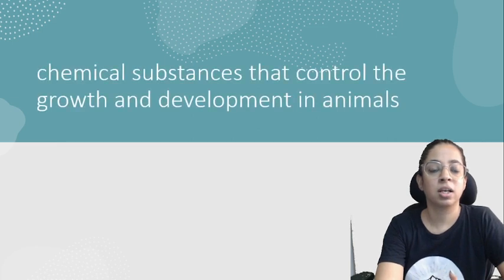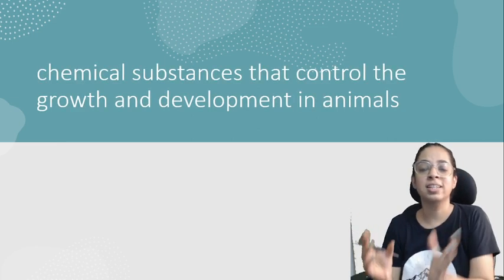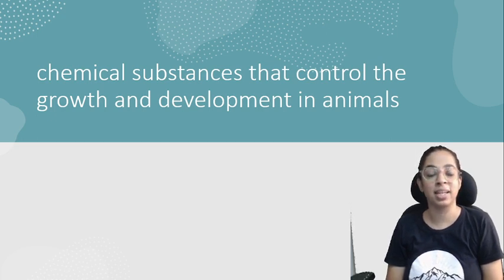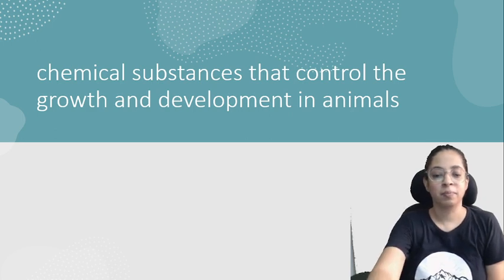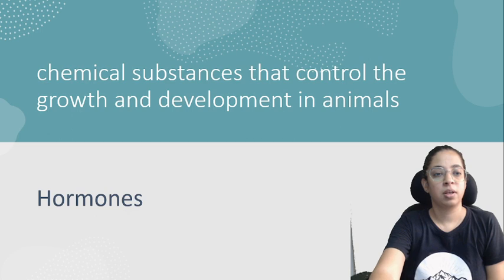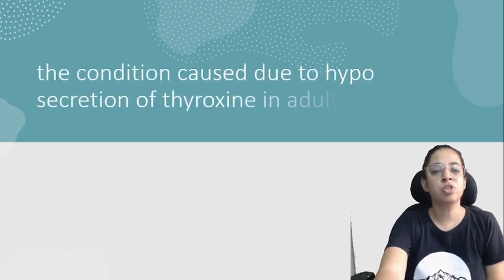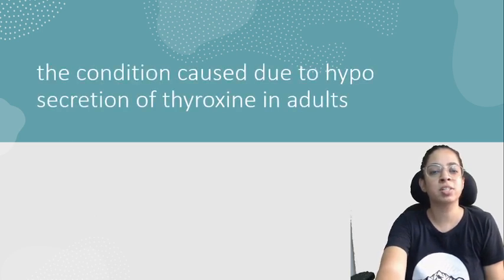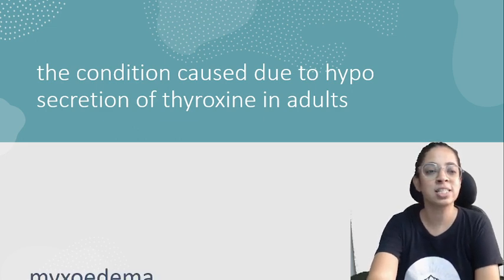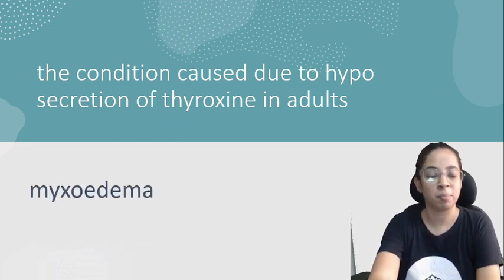Now let's move to the next category: give technical terms. The technical term for the chemical substances that control the growth and development in animals — yes, that's hormones. The condition caused due to hyposecretion of thyroxine in adults — yes, my dear students, that's myxoedema.